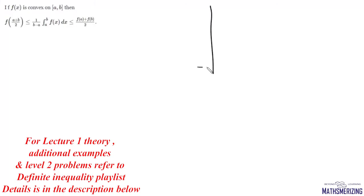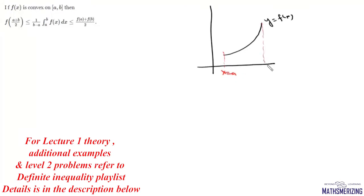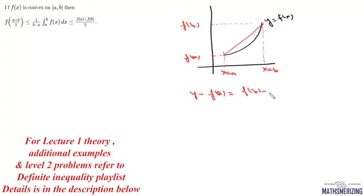What we are given is a convex function f(x) in the interval from x = a to x = b. This is f(a) and this is f(b). Now we join these two points, and the equation of this straight line will be: y − f(a) = (f(b) − f(a))/(b − a) · (x − a).